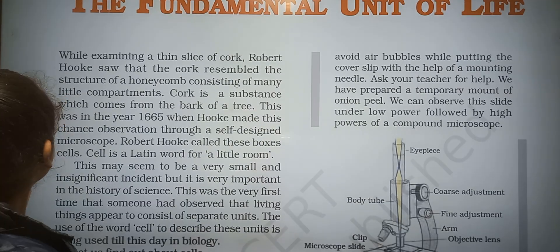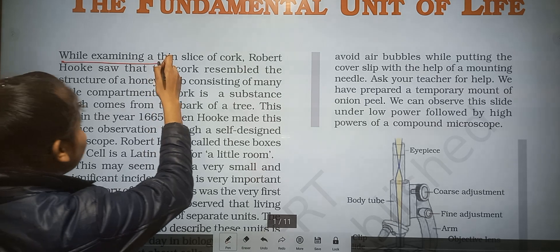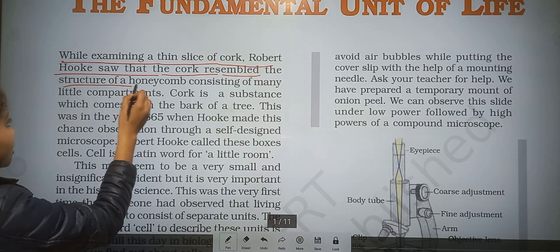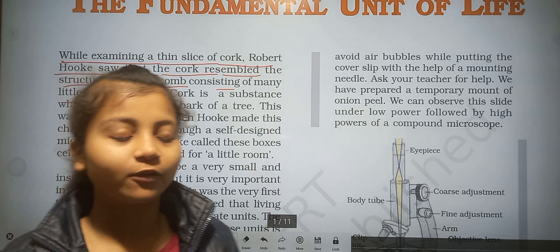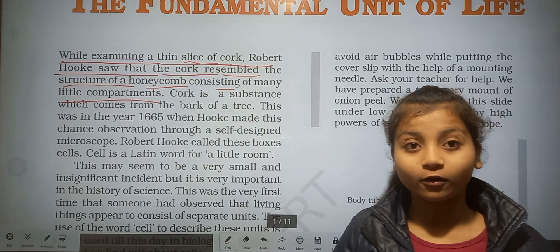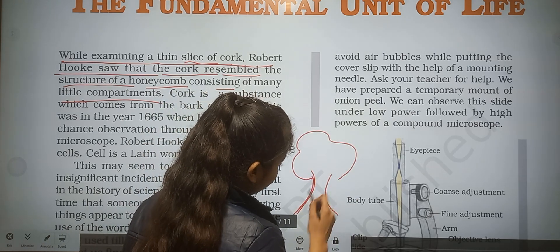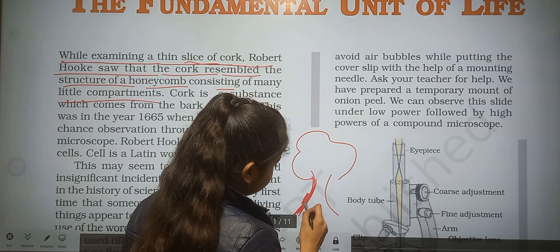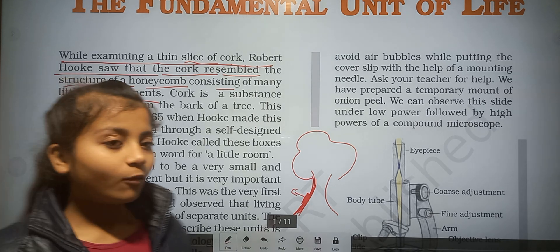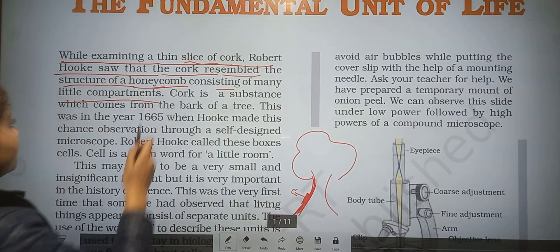Our first line states that while examining a thin slice of cork, Robert Hooke saw that the cork resembled the structure of a honeycomb consisting of many little compartments. Cork is the bark of a tree, and when Hooke observed a thin slice of cork under the microscope, he saw a honeycomb-like structure.